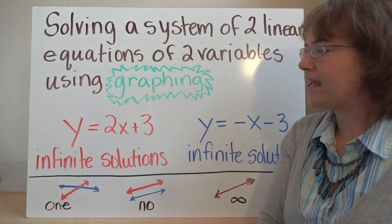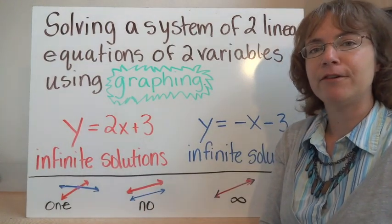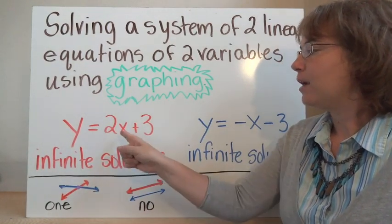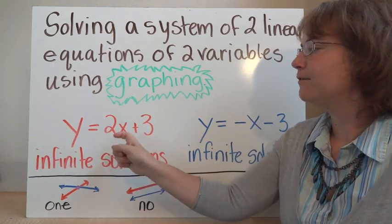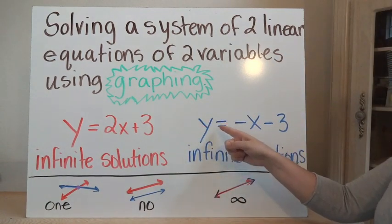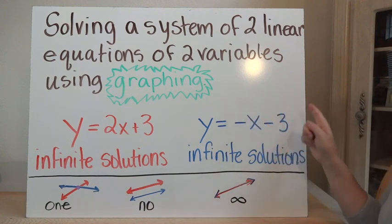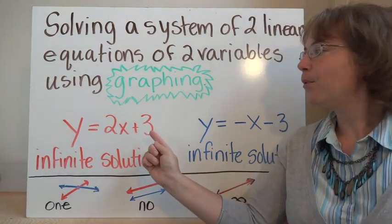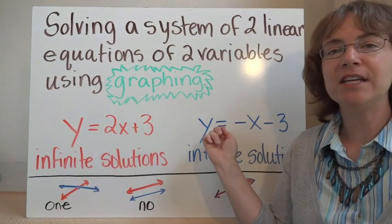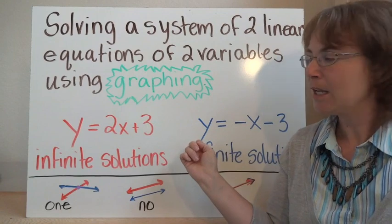If we have the line y equals 2x plus 3, that gives us infinite solutions. Lines go on forever in both directions, and an infinite amount of coordinate points fulfill this requirement. If we have another line, y equals negative x minus 3, this also has infinite solutions. The question is, is there a coordinate point that works for both of these equations — that will satisfy both of them and make them both true?